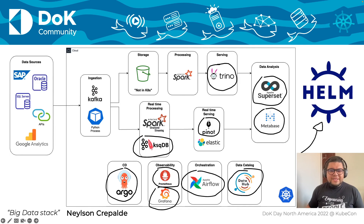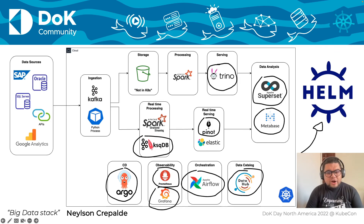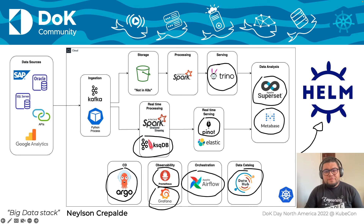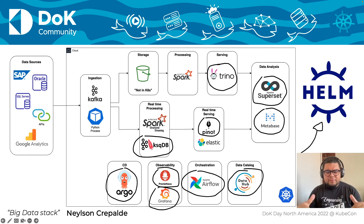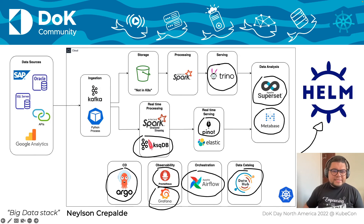For all the other tools, we mainly use Helm charts. All of them, especially the newer tools, already come with an official Helm chart — such as Airflow, Superset, and Trino. This is great because they were developed with Kubernetes-readiness in mind from the start, so we can deploy them very easily on Kubernetes with Helm charts.